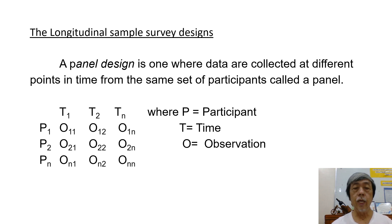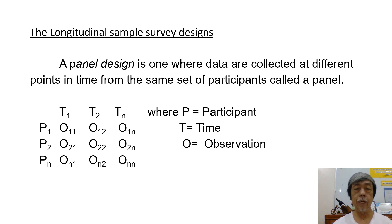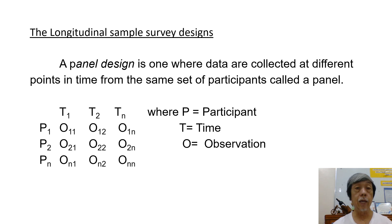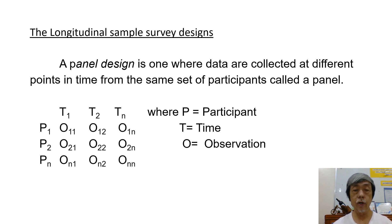There are three types of longitudinal sample survey designs, and we start with the panel design, which is one where data are collected at different points in time from the same set of participants called a panel. This is the plan for the panel design.